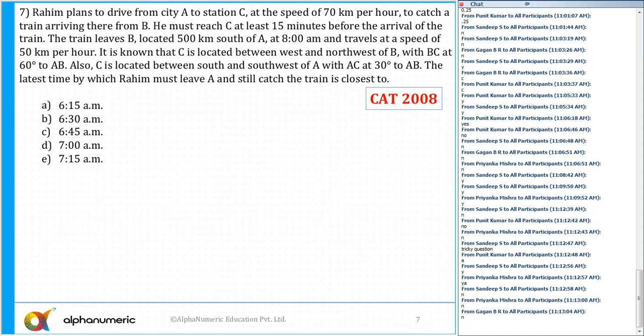There is a directional sense needed here, so let me draw the directions first. East, west, north, and south. It is known that C is located between west and northwest of B, with BC at 50 degrees to AB. Also, C is located between south and southwest of A, with AC at 30 degrees to AB.